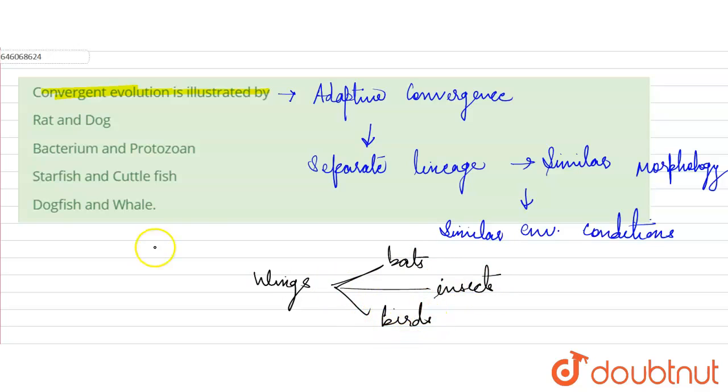Some other examples are dolphins and whales. They too show similar morphology although they have separate lineages. Now let us understand through our given options.